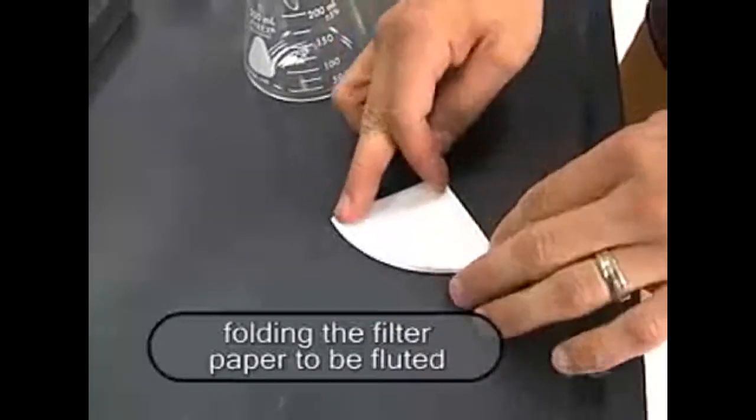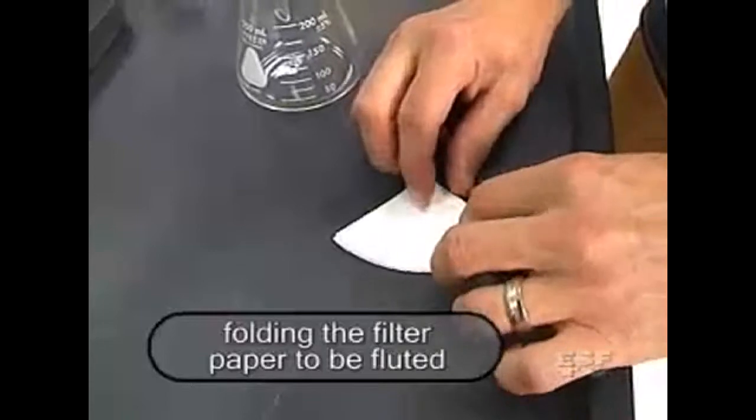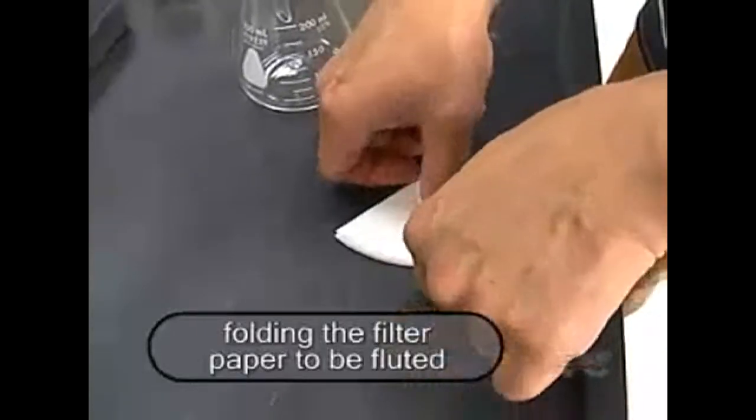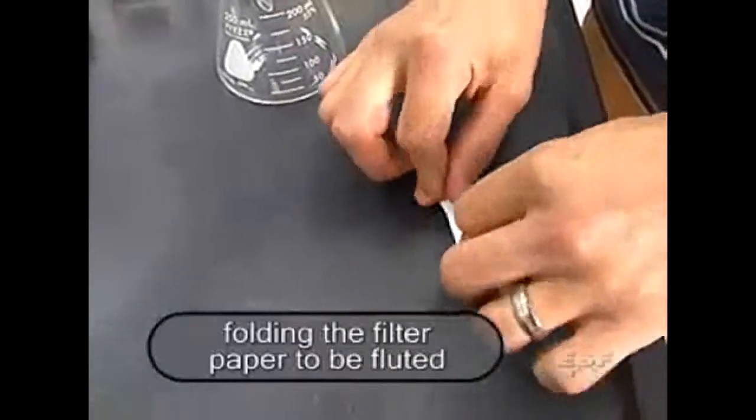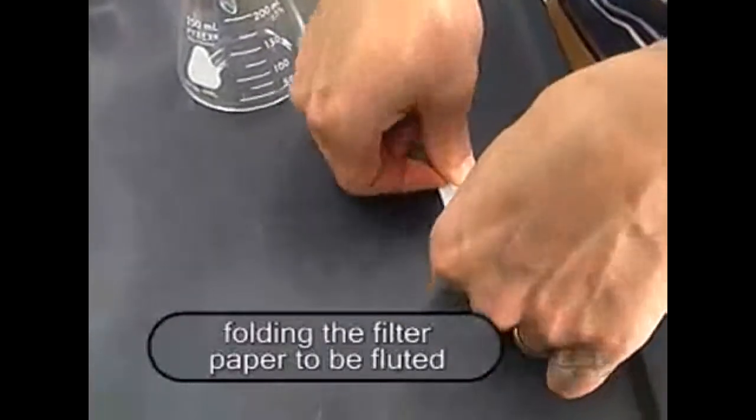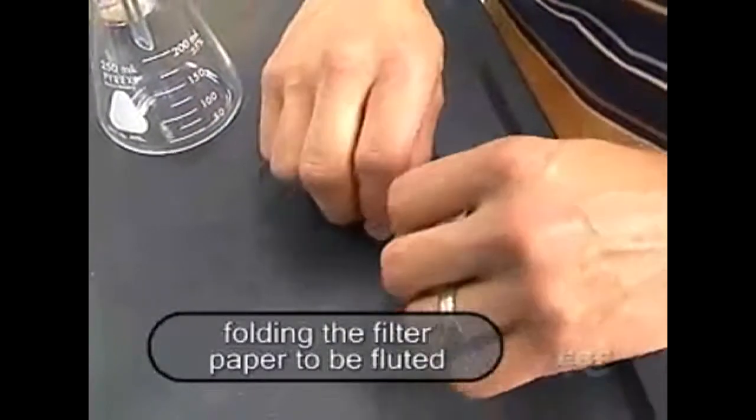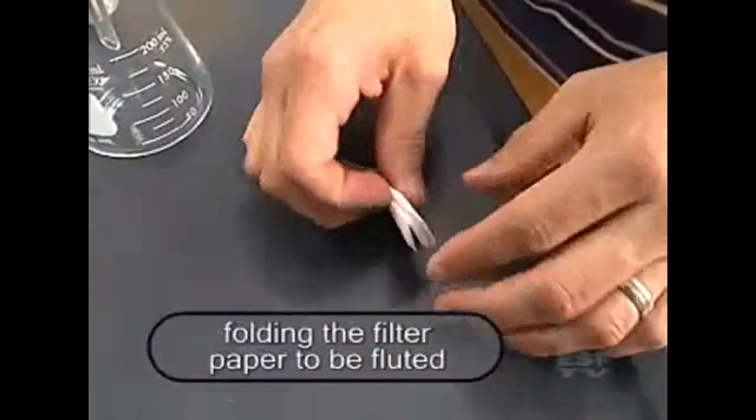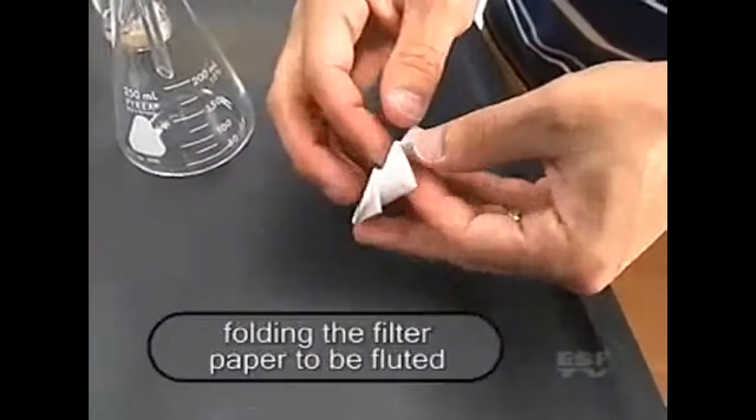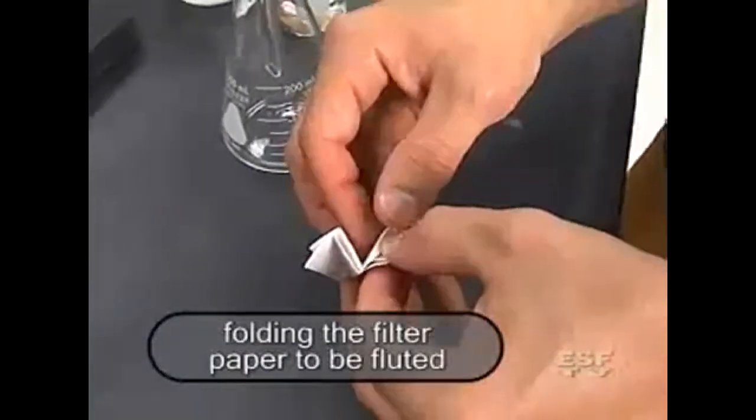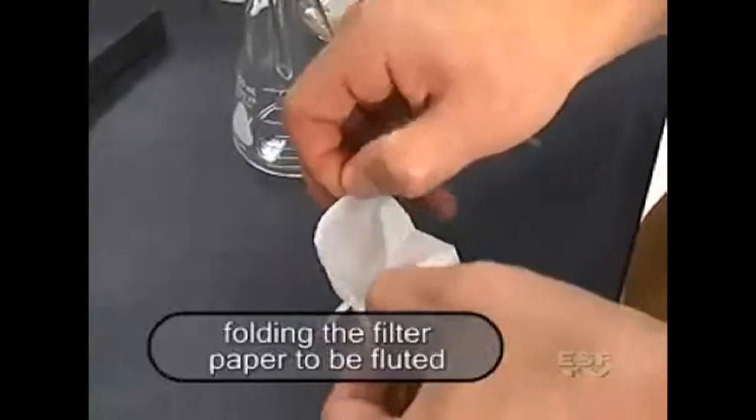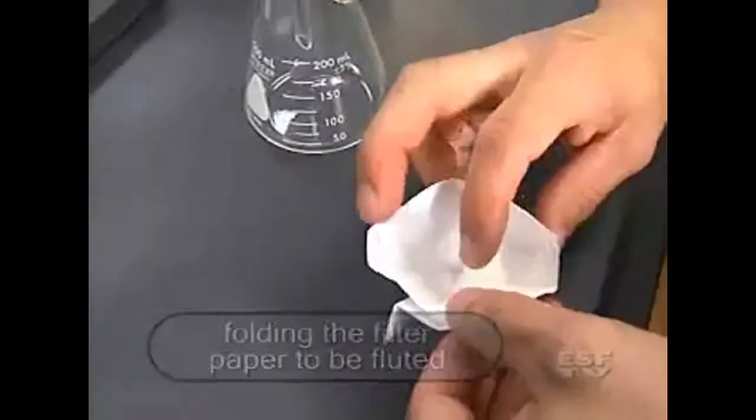Now I'm going to go through the process of fluting, which is much like folding a paper fan. So I'm going to make one fold, flip it over, fold it back, flip it over and fold it back again, and lastly one more time. And again what this is doing is forming a lot of sides to increase our surface area. Now I can open that up into a cone-like shape and we can put that inside our funnel.